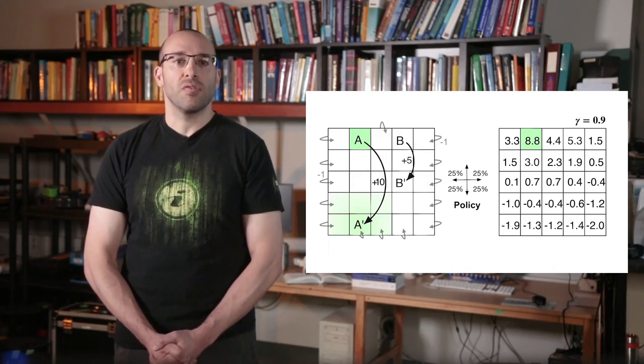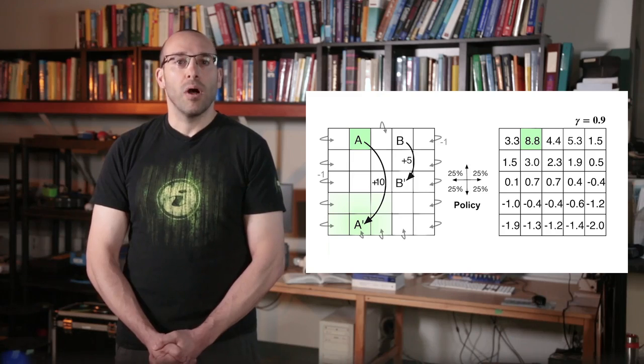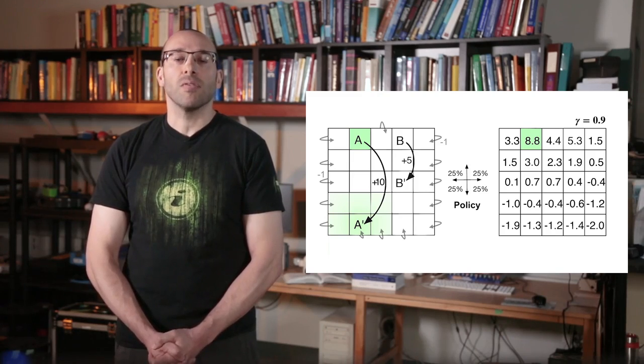Why? Because every transition from A moves the agent close to the lower wall. And near the lower wall, the random policy is likely to bump and get negative reward.